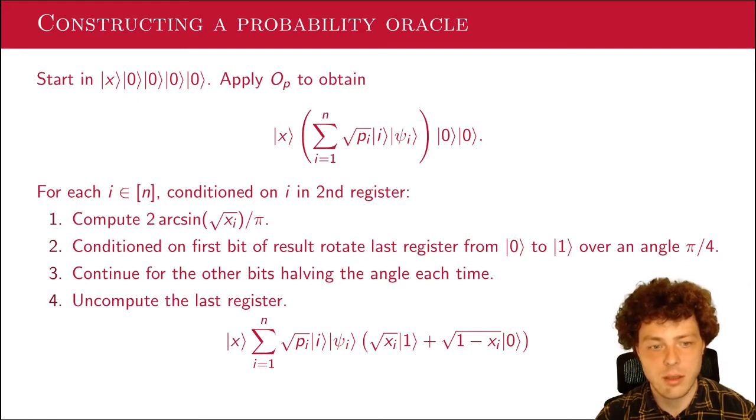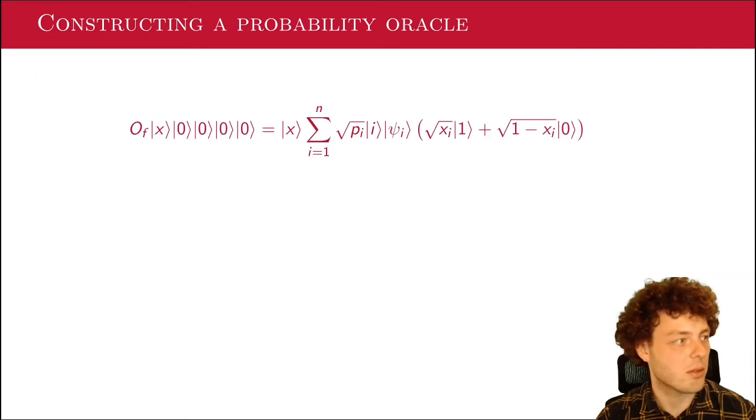If you walk through this, it actually means that, and if you uncompute the last register, we in the end have rotated this last qubit by exactly square root of x_i. And that's why we computed two times the arcsine of square root of x_i over π. So after we have uncomputed this and done this for every i, we end up with this state. We have x in the first register still, but then after that, we have a superposition of square root p_i. And every time in the last bit is either one or zero, and it's one with an amplitude of square root of x_i. Okay, and now we're actually almost done already. I'll just rewrite the state a bit.